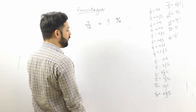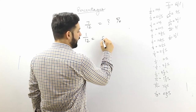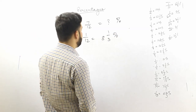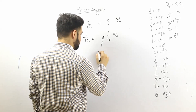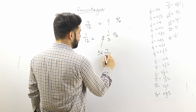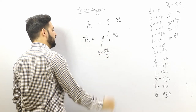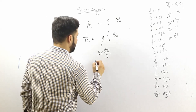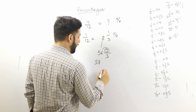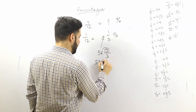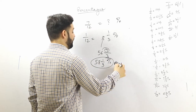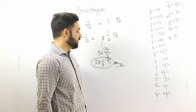The value of 1/12 is 8 and 1/3 percent. To get 7/12, multiply 8 by 7. The numerator 7 is greater than the denominator 3, so we carry forward 2, giving us 58 and 1/3 percent.